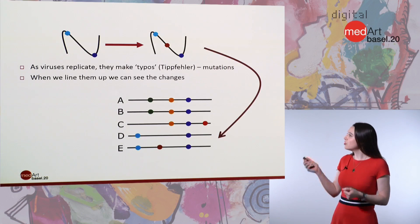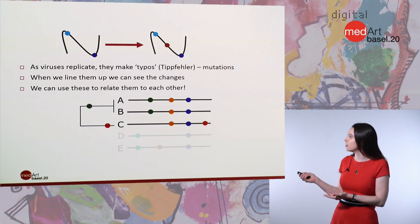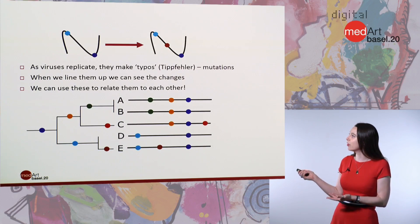When we show the genomes together — here as a black line with differences shown as different colored dots — we can see how some strains have similar mutations and some strains have different mutations. We can use these to draw connections showing how the viruses are related to each other, with more similar viruses being close together and more different viruses falling further apart.